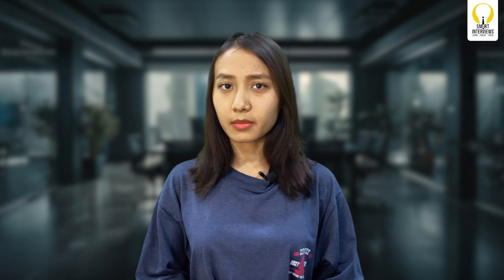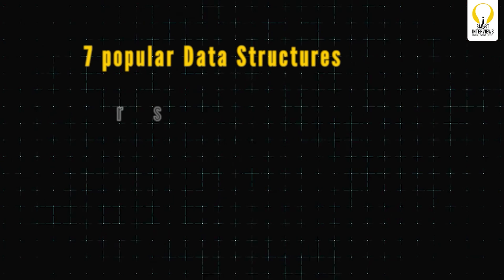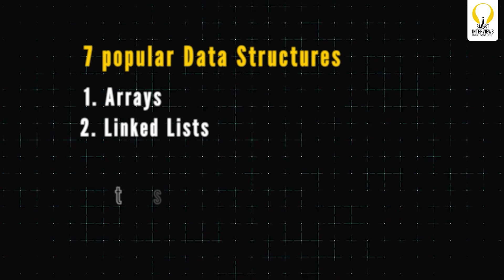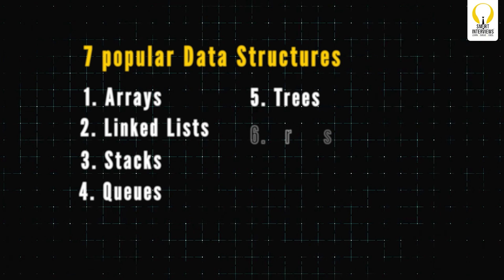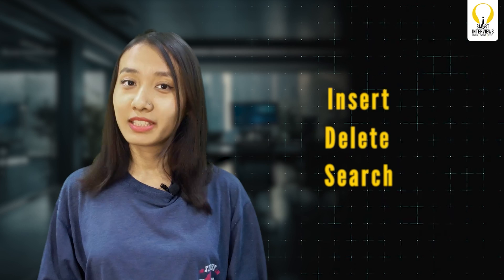Before we dive deep, a quick heads up. This video assumes that you have a basic understanding of data structures and know a little about things like arrays, strings, and linked lists. There are seven popular data structures that an interviewer expects you to know if you're a developer: arrays, linked lists, stacks, queues, trees, graphs, and hash tables or sets. You must learn the basics and implementation of each of these data structures, and the time complexity required to insert, delete, or search an element within them.